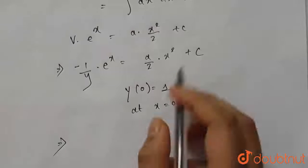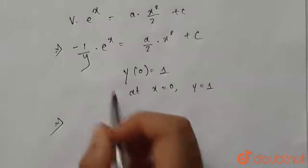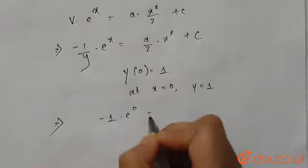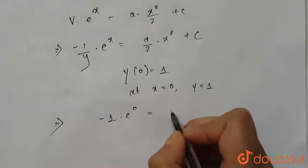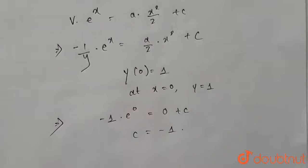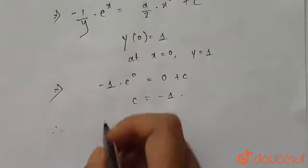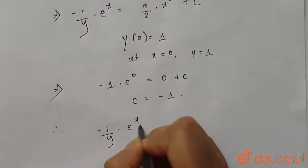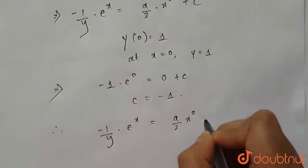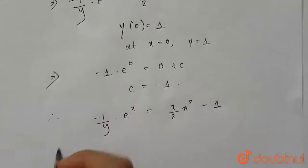Substituting x = 0, y = 1: (−1/1)·e⁰ = a·0²/2 + C, so −1 = 0 + C, giving C = −1. Therefore the particular solution is (−1/y)·eˣ = a·x²/2 − 1.